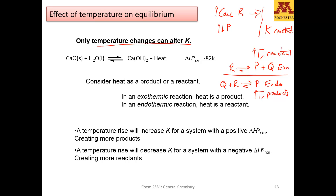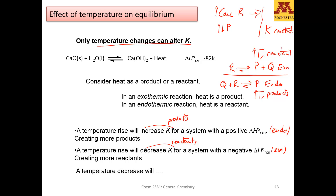A temperature rise will increase K for a system with a positive ΔH — that is, for endothermic reactions — and a temperature rise will decrease K for exothermic reactions. Increasing K means the reaction moves towards products, and decreasing K means it will move towards reactants. You can do the same analysis for a temperature decrease.